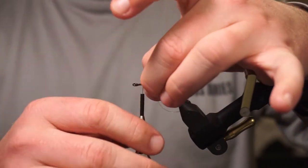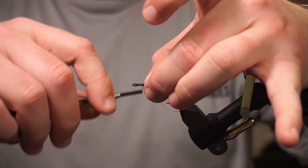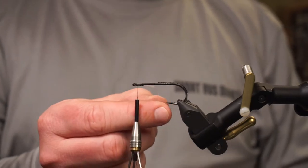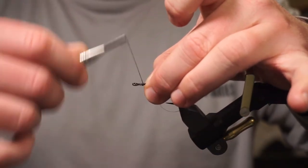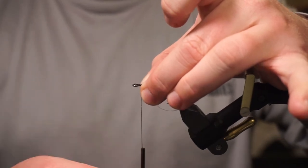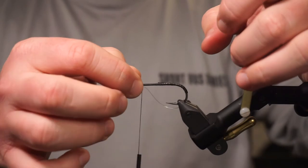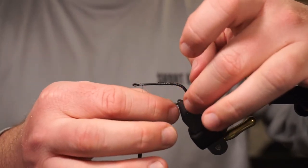Tie it off just right underneath the eye of the hook. If you leave yourself a little bit of room, you can adjust how big of a gap you're going to have between the hook point and the weed guard.